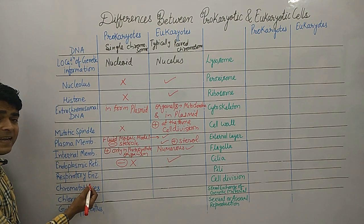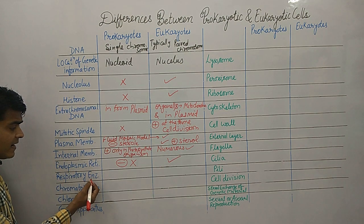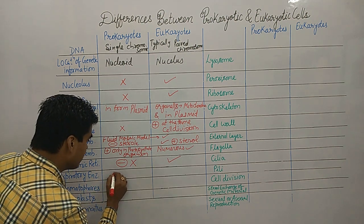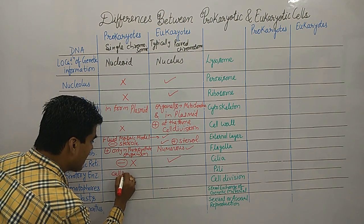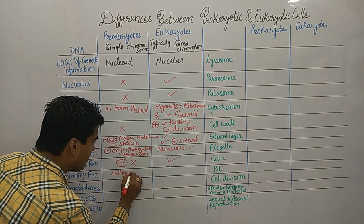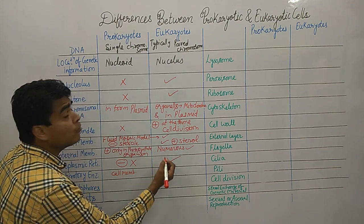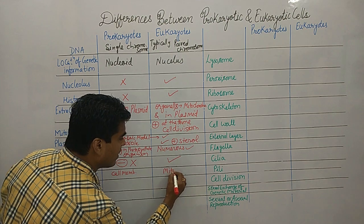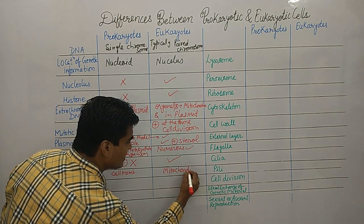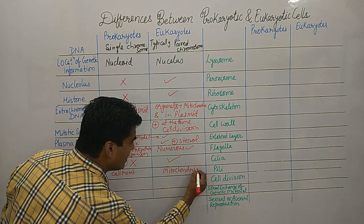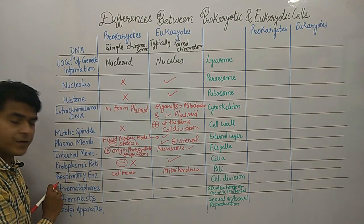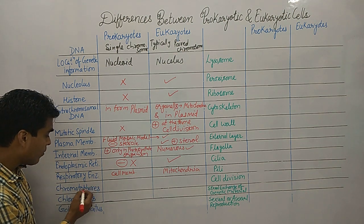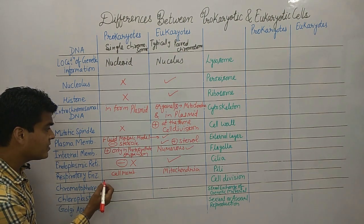Respiratory enzymes in prokaryotes are present in the cell membrane, whereas in eukaryotes they are present in the mitochondria. This is an important point, as examiners often ask about the position of respiratory enzymes.